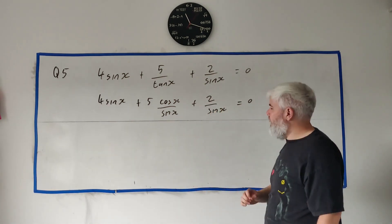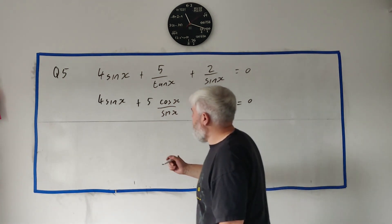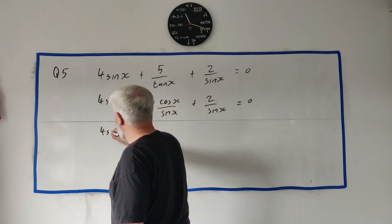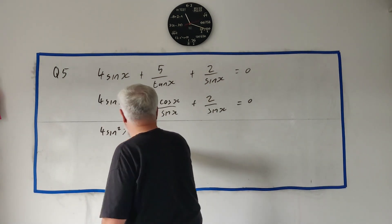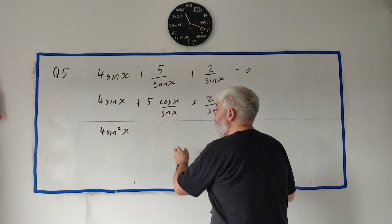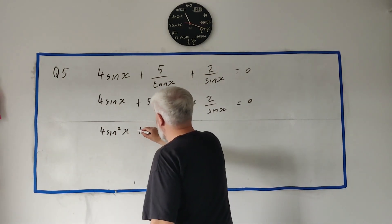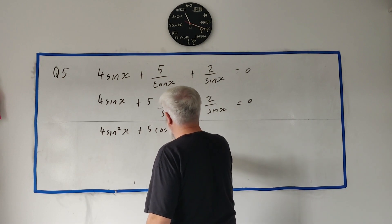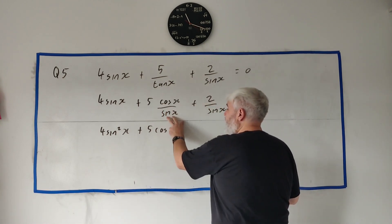I'm already thinking ahead that I would have a sine squared here that can be turned into cosine quite easily. So let's do that first. We would have four sine squared x, and then we would have five cosine x, that's the sine squared multiplying here and canceling.